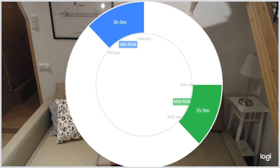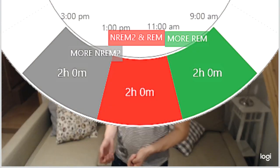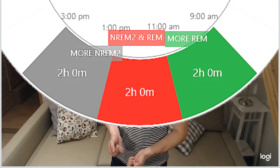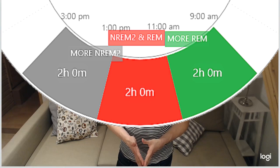Morning naps during graveyard hours are more likely to contain SWS unless all SWS need has been taken care of by the core. And REM-containing naps will be more likely as you progress towards the REM peak at around 06:00 to 09:00. Around noon, naps can predominantly contain both NREM 2 and REM or only NREM 2, depending on the sleep pressure of the schedule. By the way, longer 90-minute siestas around noon will typically contain both SWS and REM.